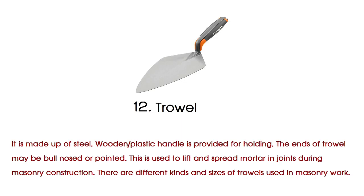Trowel is made up of steel. A wooden or plastic handle is provided for holding. The ends of the trowel may be bull-nosed or pointed. It is used to lift and spread mortar in joints during masonry construction. There are different kinds and sizes of trowels used in masonry work.